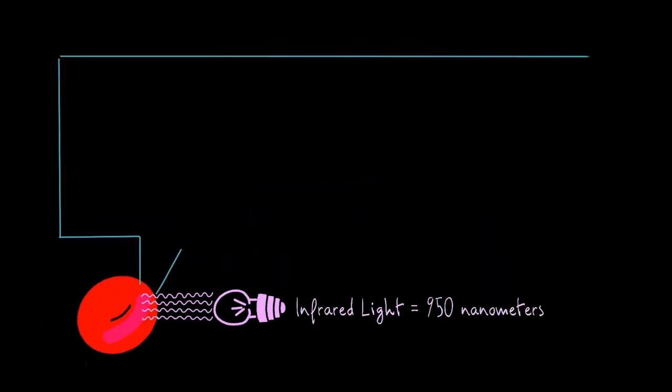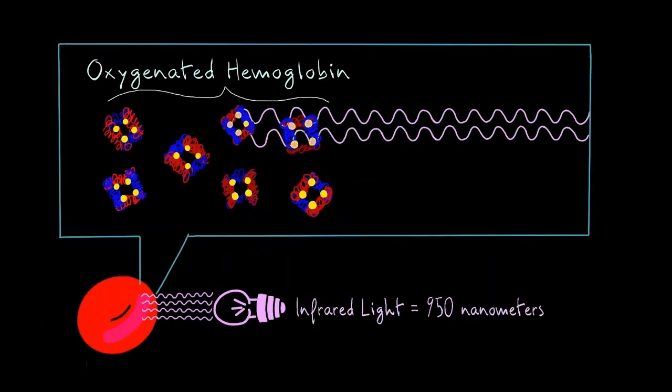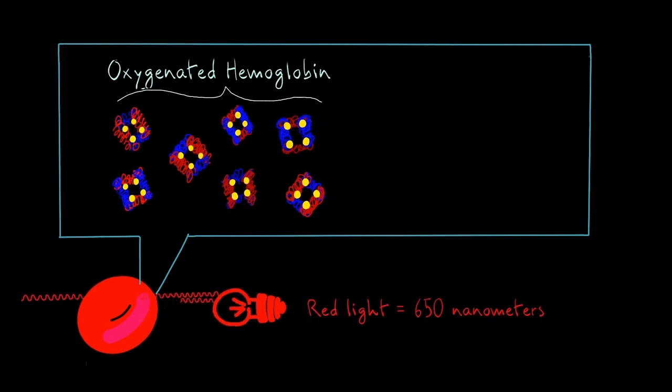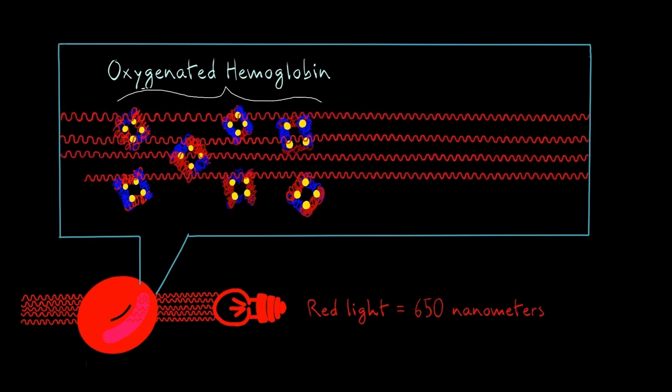In this case, oxygenated hemoglobin absorbs more infrared light at 950 nm than red light at 650 nm. The red light passes straight through the oxygenated hemoglobin.